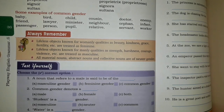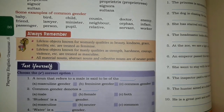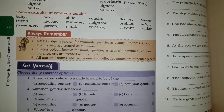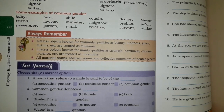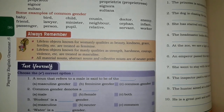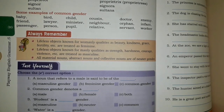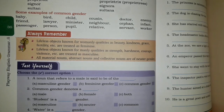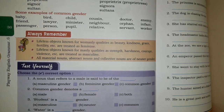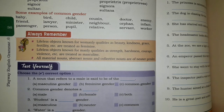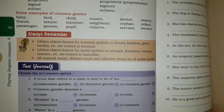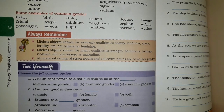Now let's talk about some important 'always remember' points that will help you answer various questions. Womanly qualities — for example, beauty, kindness, and grace — these qualities are mainly associated with girls. So these qualities, when talked about, we treat them as feminine gender.